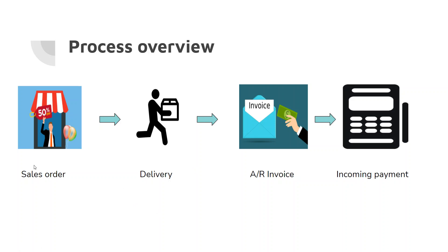In the sales process we basically have four main documents. Consider a scenario where you have a business and you place customer satisfaction as your top priority. To handle each and every order from your customers — even during rush hours — and fulfill them on time, SAP Business One provides four different documents. The most important one is the AR invoice, which I'll discuss in this video.